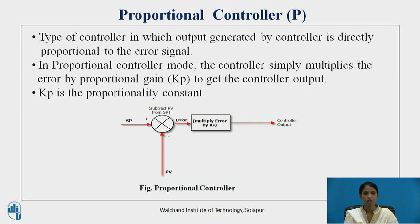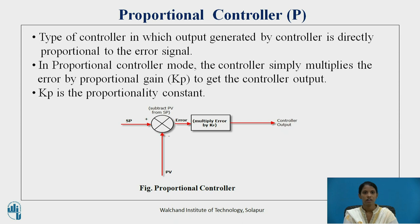Let us see what is a proportional controller, also indicated by capital P. A proportional controller is one in which the output generated by the controller is directly proportional to the error signal. The controller simply multiplies the error by the proportional gain Kp to get the controller output, where Kp is the proportionality constant. In the diagram, the error is multiplied by Kp and we get the controlled output.